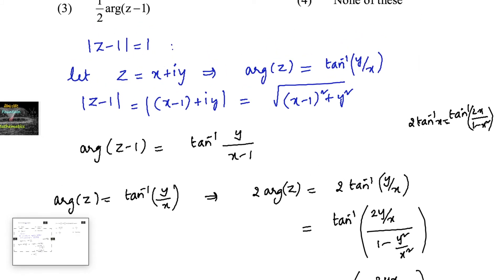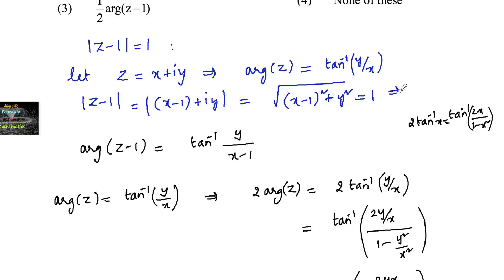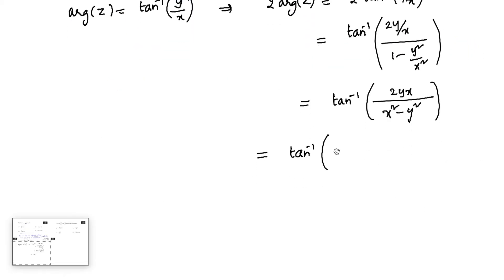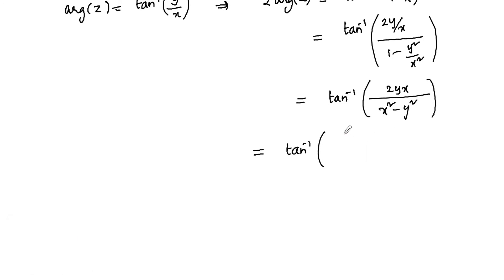It is given that mod of z minus 1 is equal to 1, so (x minus 1) squared plus y squared is equal to 1. From here we can write that 2yx upon x squared minus y squared is nothing but 1 minus (x minus 1) squared.